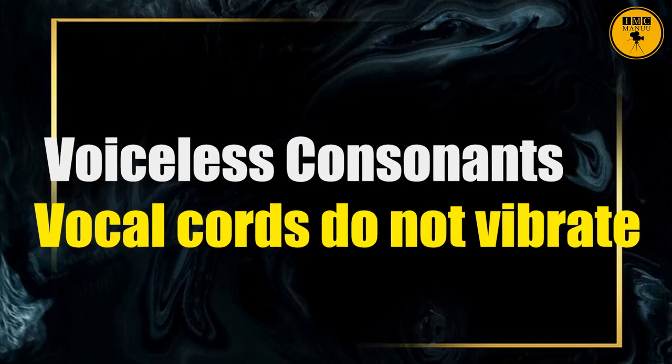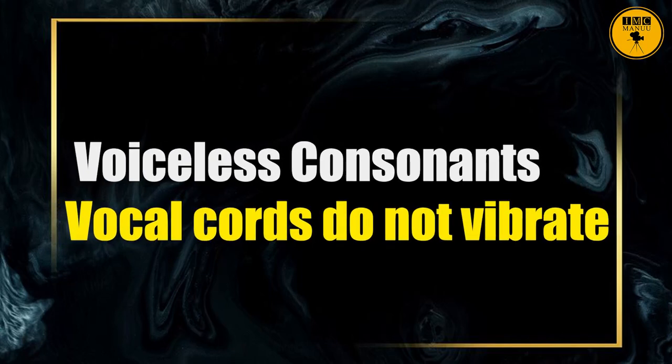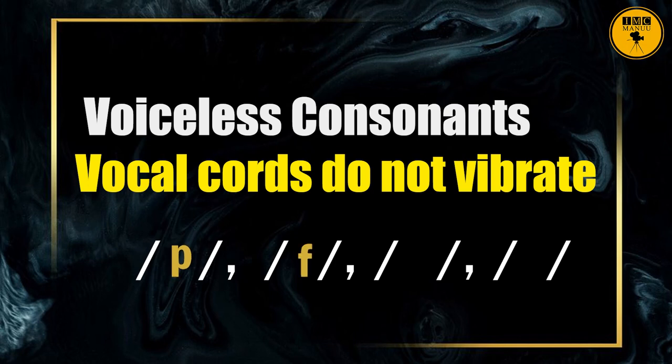Voiceless consonants are those in the articulation of which the vocal cords do not vibrate. A very easy way to practice this is to put your fingers at the place where the vocal cords are and utter the words. When you say 'per,' there is no vibration. When you say 'for,' there is no vibration. When you say 'ker,' there is no vibration. When you say 'ter,' there is again no vibration.